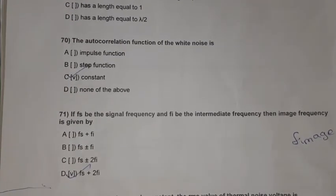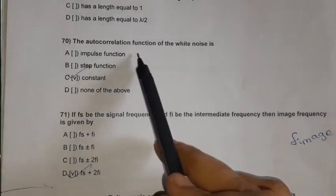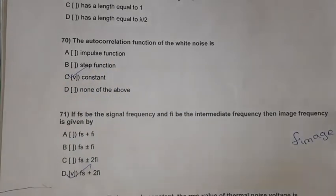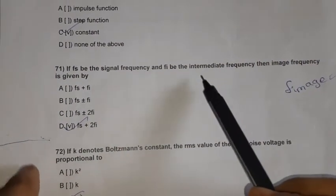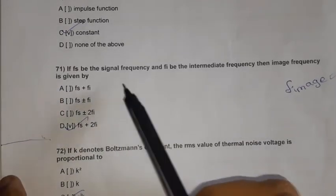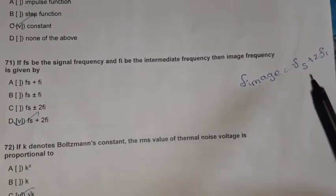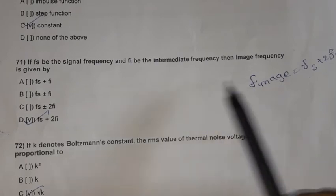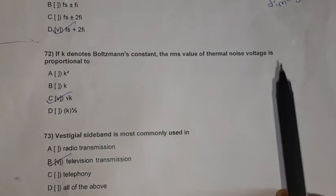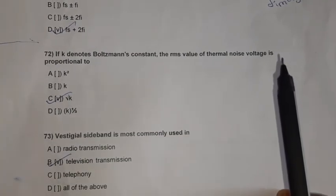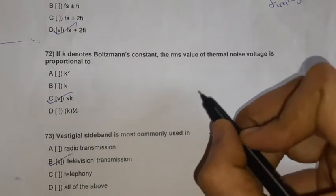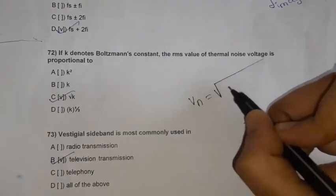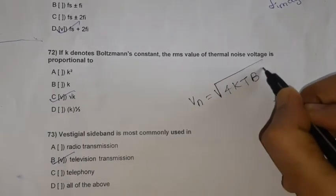Question 70: The autocorrelation function of white noise is constant. Question 71: If FS is the signal frequency and FY is the intermediate frequency, then the image frequency is given by F_image equals FS plus 2 × FY. Question 72: The RMS value of thermal noise voltage is VN equals the square root of 4KTBR, so VN is proportional to the square root of K, the Boltzmann constant.